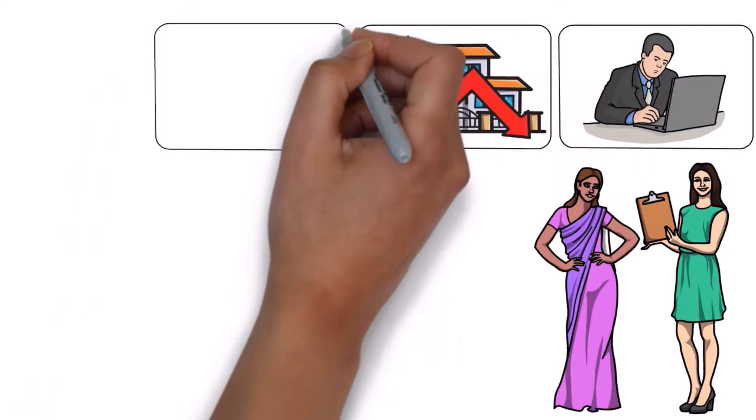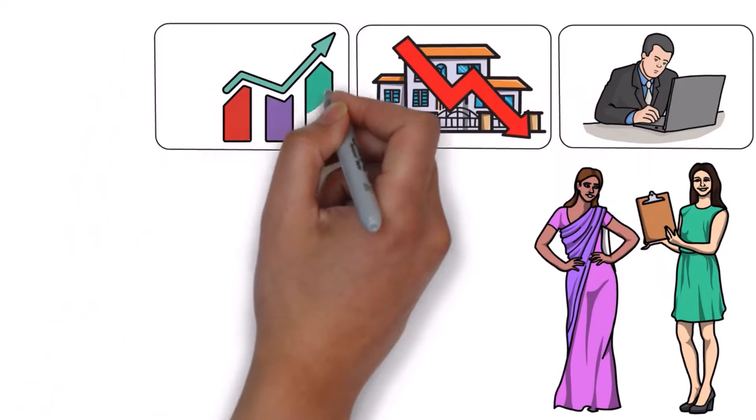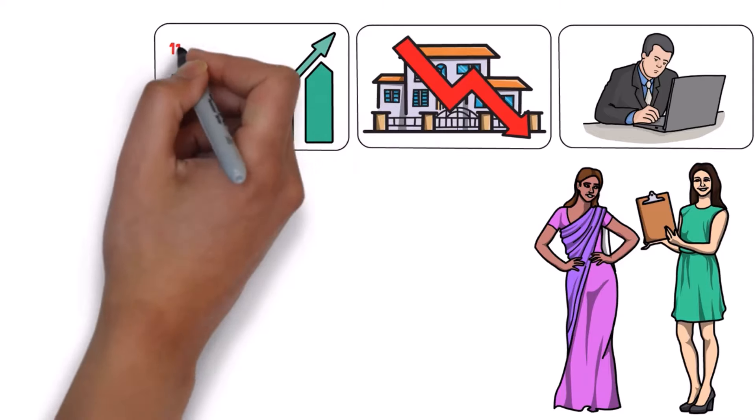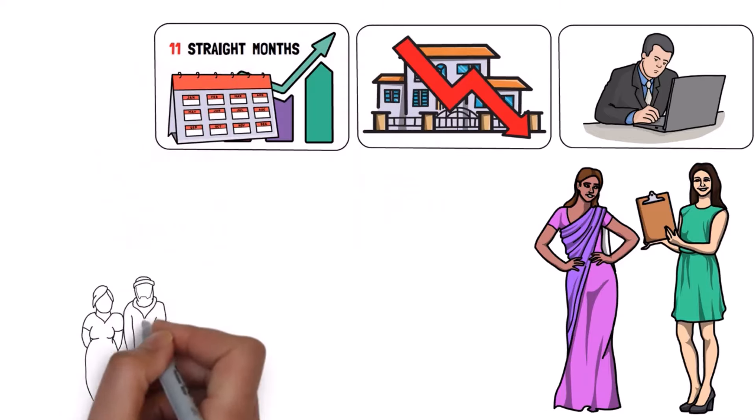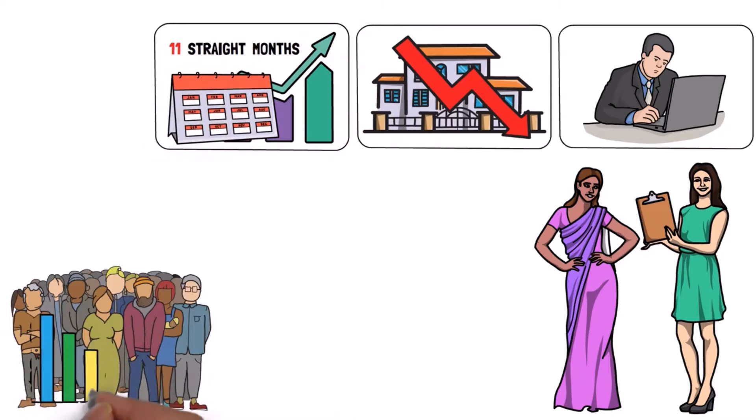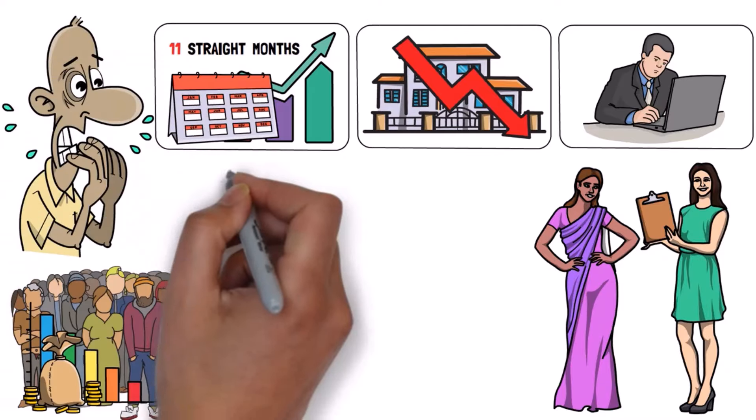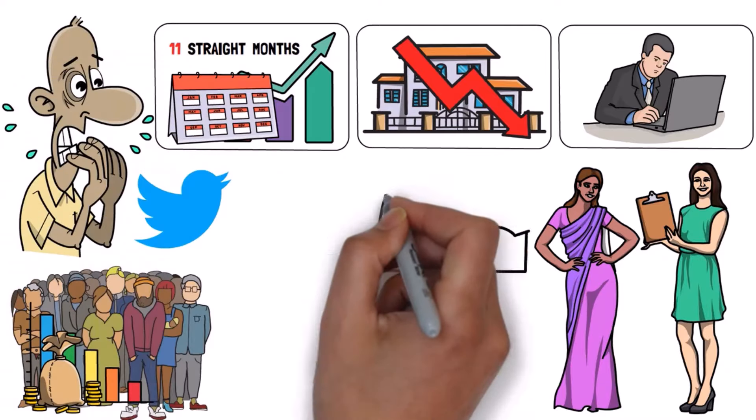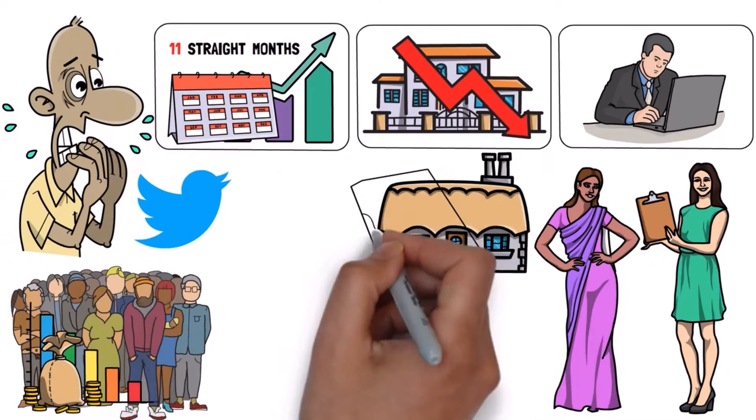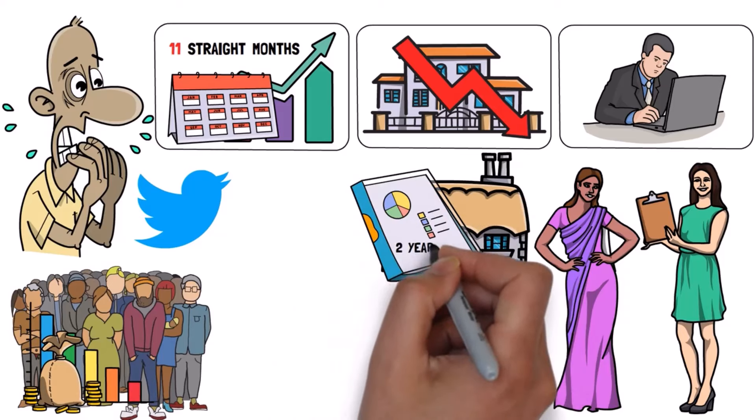After all, home prices have just recently hit yet another all-time high in December after rising for 11 straight months. More and more Americans are beginning to rush back into the housing market with record down payments, and the most surprising thing about all of this is that, according to my Twitter poll, nearly half of those surveyed said that they were likely to buy a house in the next two years.